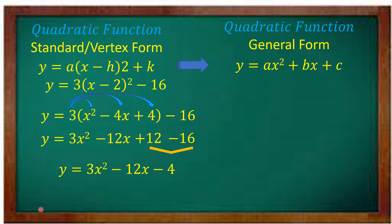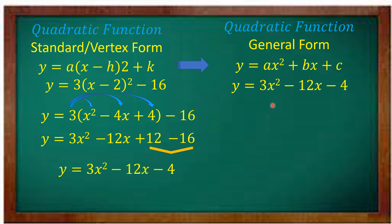The final answer is y is equal to 3x squared minus 12x minus 4. The minus 4 came from combining positive 12 and negative 16 — they have different signs, so subtract and copy the sign of the larger absolute value, which is negative, giving negative 4. This is now your general form. So from vertex form, we made general form, and earlier from general form, we made vertex form — this lesson goes both ways.